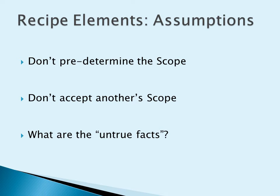Now we come to the assumptions in our recipe mystery. Don't predetermine the scope. The scope of the recipe says that it makes three to four servings. What if I need to feed six to eight or more people? Completing this recipe would not be enough — adjustments would have to be made to the quantities. And not all ingredients need to or should be directly multiplied; for example, cooking oil is variable depending on the condition of the pan and the size of the pan.